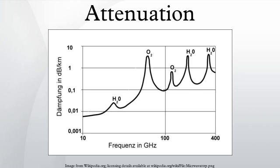One area of research in which attenuation figures strongly is in ultrasound physics. Attenuation in ultrasound is the reduction in amplitude of the ultrasound beam as a function of distance through the imaging medium. Accounting for attenuation effects in ultrasound is important because a reduced signal amplitude can affect the quality of the image produced. By knowing the attenuation that an ultrasound beam experiences traveling through a medium, one can adjust the input signal amplitude to compensate for any loss of energy at the desired imaging depth.